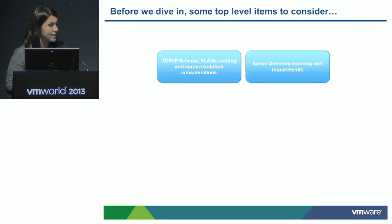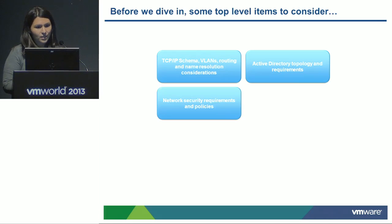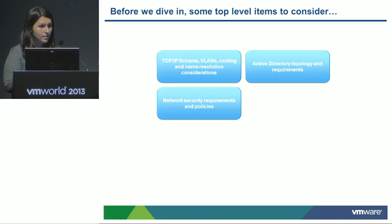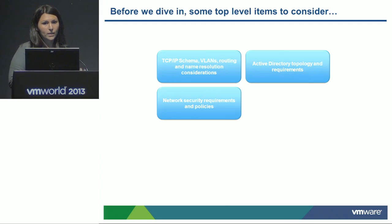The next component covers all the different AD requirements, especially for Workspace, which has a few requirements, and of course how you're going to set up with View. If you have multiple sites, make sure you set up your different forests or sub-child domains. Next, consider your network security requirements and policies — make sure you set up your data policies. If you have governance requirements such as HIPAA or PCI, make sure your network is properly configured, and feed all these considerations into how you set up vCNS.